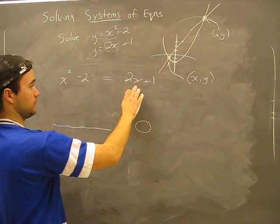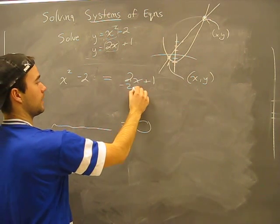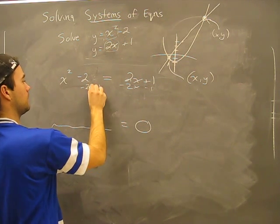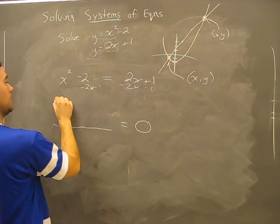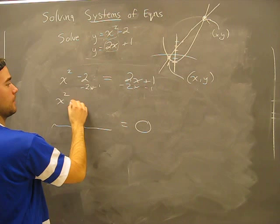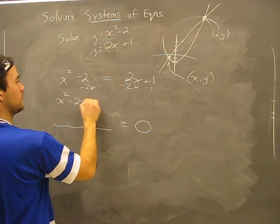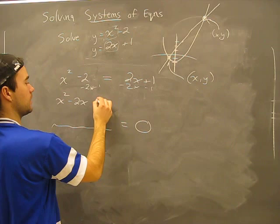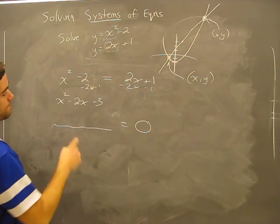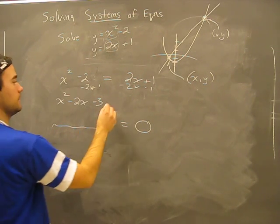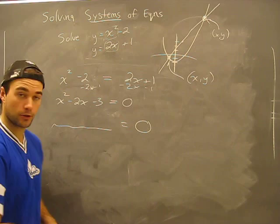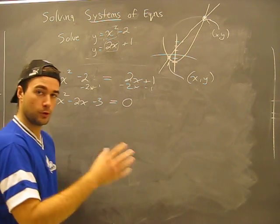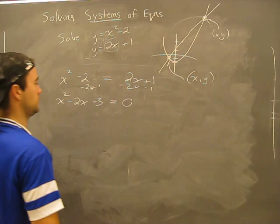Now, because we're dealing with parabolas, we want to set everything to zero so you have something equals zero. Let's do this: subtract 2x and subtract 1 from both sides. I get x squared minus 2x minus 3 equals zero. Nothing left on the right side.